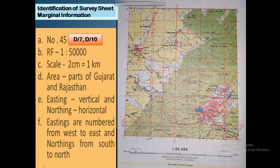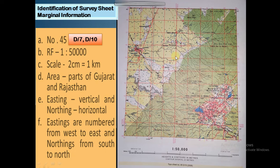Identification of the survey sheet, or marginal information — these are the basic details we need to know before starting the chapter. Maps 45D/7 and 45D/10 have a scale of 1:50,000, meaning 2 centimeters on the map represents 1 kilometer on the ground. The areas covered are parts of Gujarat and Rajasthan. Easting refers to vertical lines and northing to horizontal lines; easting is numbered from west to east and northing from south to north.